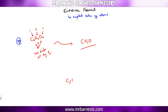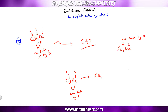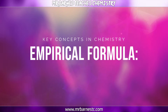Another example: C₃H₉ — both divide by 3, giving CH₃. And finally, Fe₈O₁₂ — both divide by 4: 8÷4=2, 12÷4=3, giving Fe₂O₃. The key thing here is this will only be worth one mark — it becomes a lot more complicated with the complex calculations.